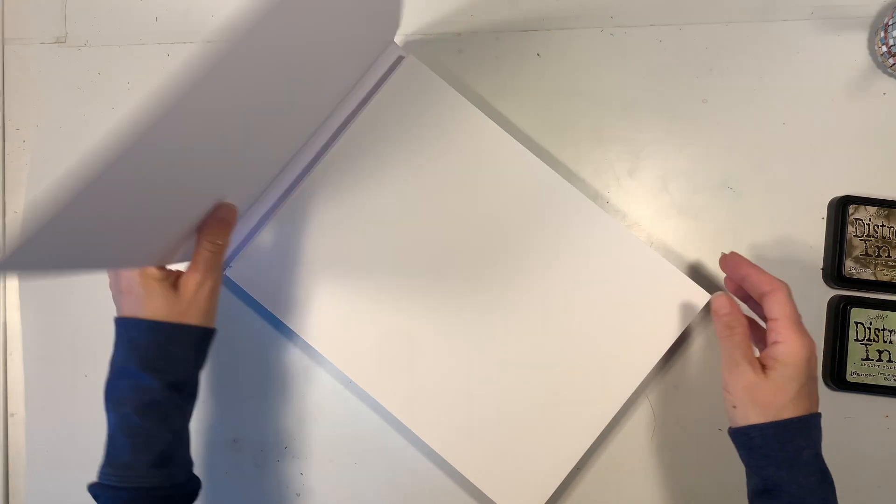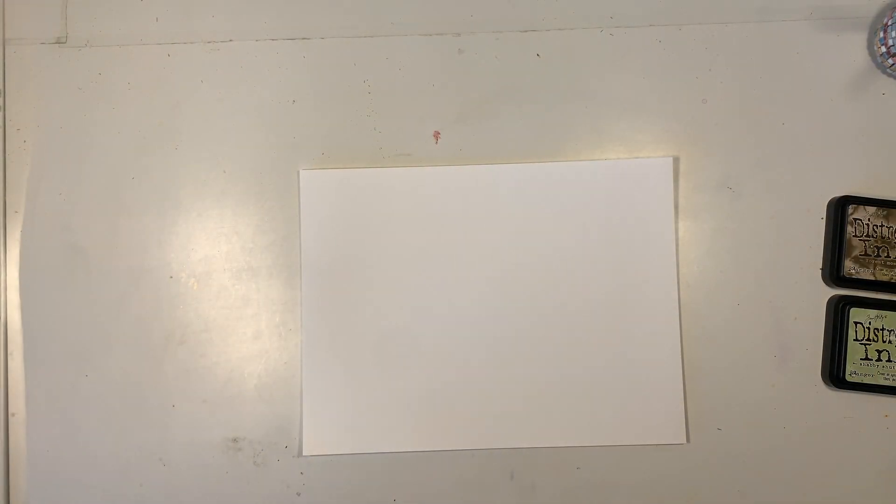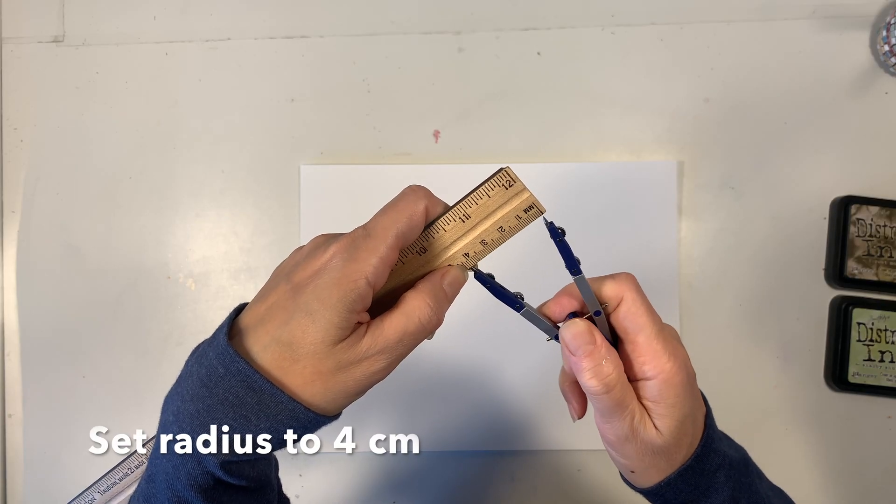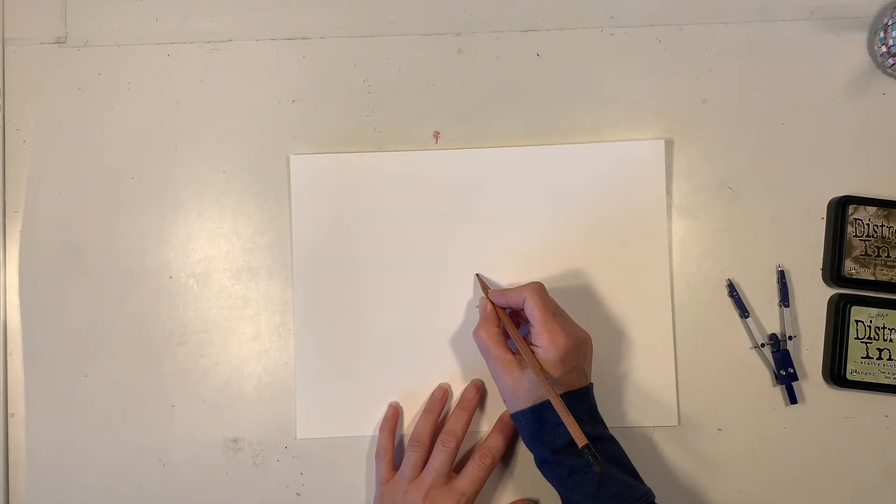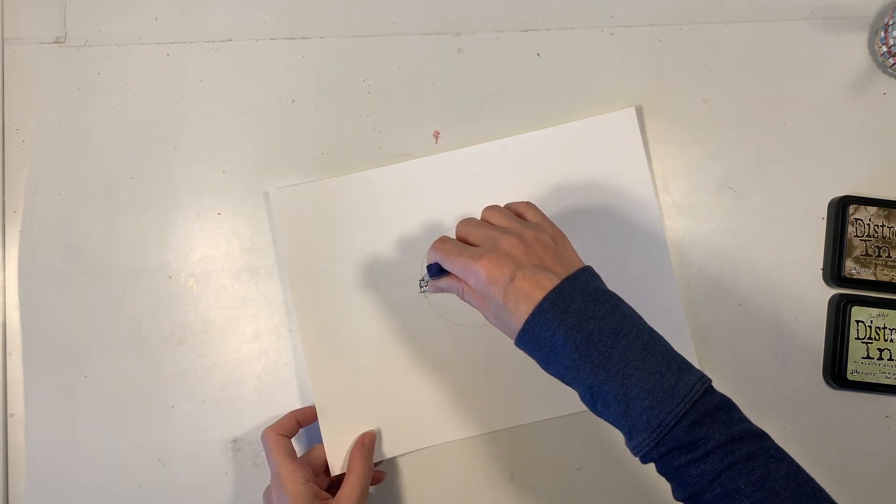The first thing I'm going to do is take a piece of my Fabriano 90-pound hot press watercolor paper. This has a nice smooth finish, and it is 9 inches by 12 inches. I'm going to set my radius to 4 centimeters. I've eyeballed the center of the page, and now I'm going to draw my very first circle.